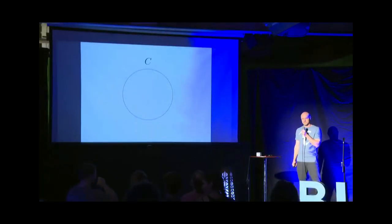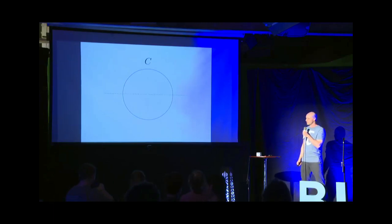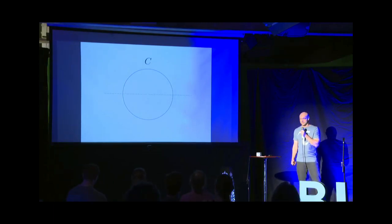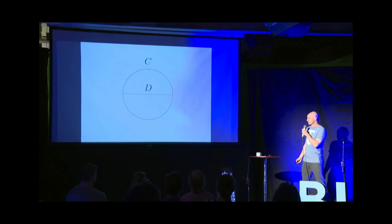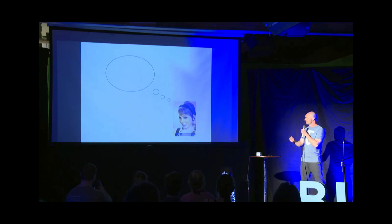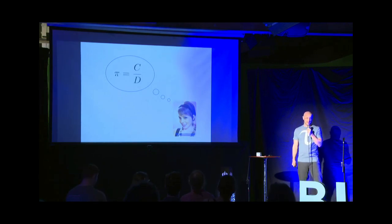The subject of the Tau Manifesto is the circle constant. That is to say, the number that relates the circumference of a circle to its linear dimension. Now, the traditional choice for that linear dimension is just the width of the circle, the diameter d. And this leads to a traditional choice for the circle constant, which is c over d, usually called pi.